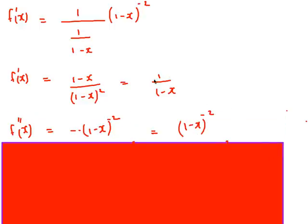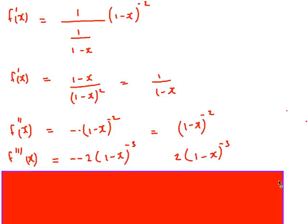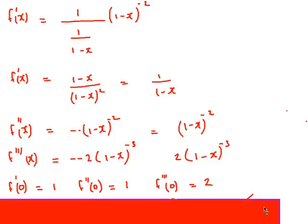I do the same thing. So f dash of x, I write it as (1 minus x) to the minus 1, bring the power down, decrease the power by 1. I have two negatives again which become positive, so I end up with (1 minus x) to the minus 2. And then the third differential, same method as before, I end up with 2 times (1 minus x) to the minus 3. So I've got my three differentials.